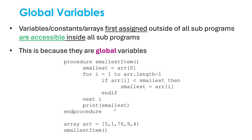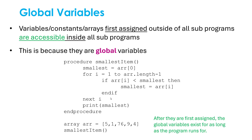At this point, note that different languages implement global and local variables differently, so this exact example might not work in some languages and might cause an error. But typically, global variables are first assigned outside and can be used inside with no problem, because they are available for the entirety of the program. Once first assigned, they're good to go for the whole program — they don't stop existing midway through like a local variable does.